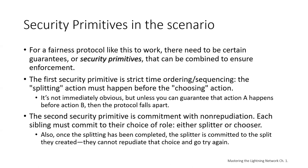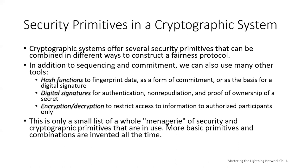The second security primitive is commitment with non-repudiation. Each sibling must commit to their role — either splitter or chooser. Once the splitting has been completed, the splitter is committed to the split and can't repudiate that choice and try again. Cryptographic systems offer a number of security primitives that can be combined in different ways to construct a fairness protocol. In addition to sequencing and commitment, others include hash functions to fingerprint data as a form of commitment or as a basis for a digital signature; digital signatures for authentication, non-repudiation, and proof of ownership of a secret; and encryption and decryption to restrict access to information to authorized participants only.